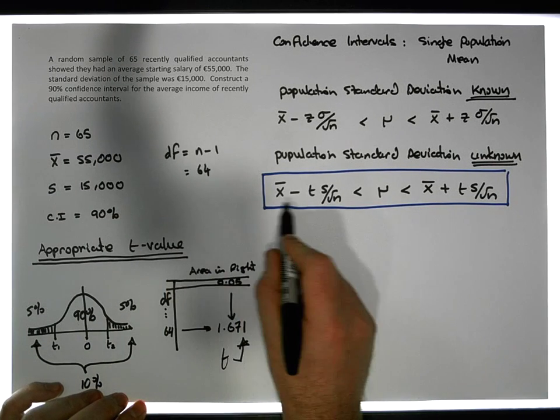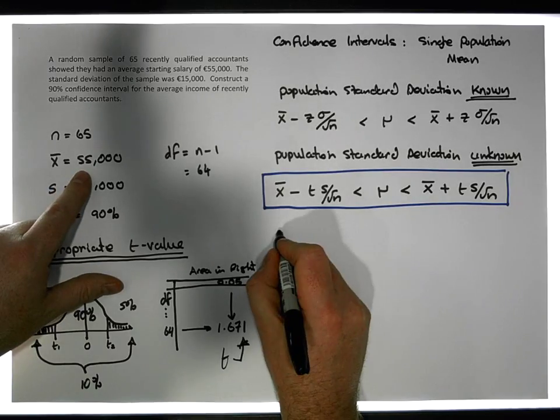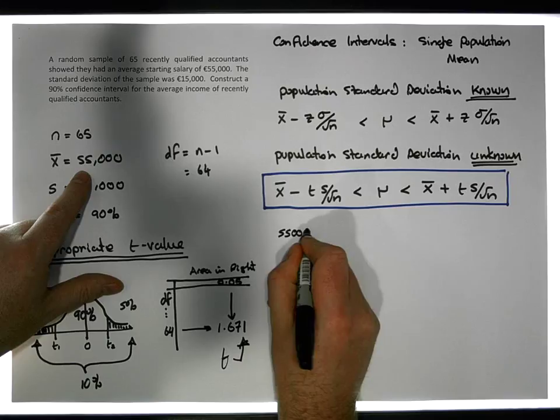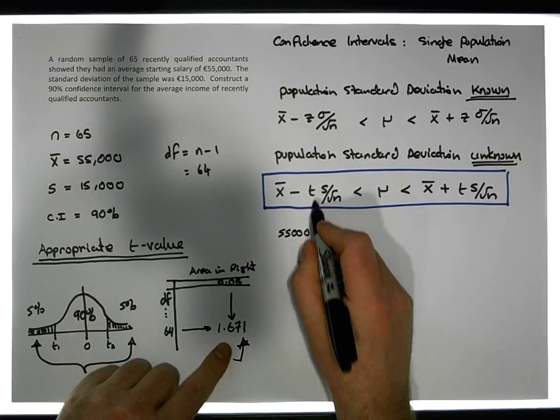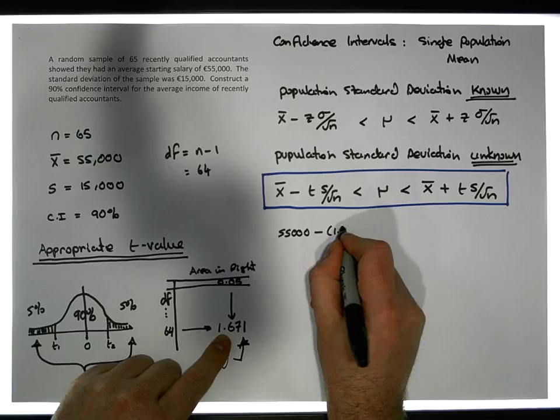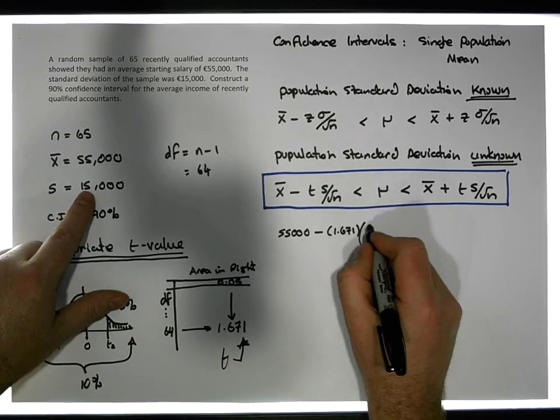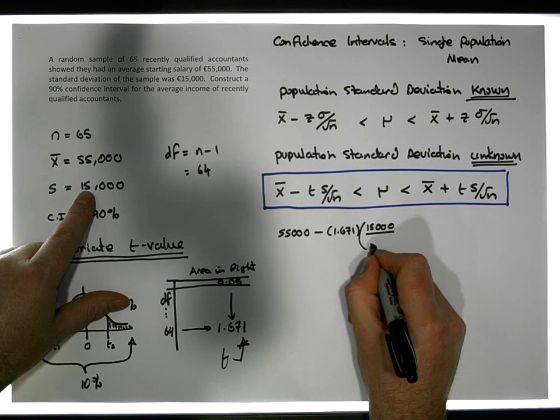Let's substitute in our values. On the right-hand side we're going to have 55,000 euros minus the t-value that's associated with this particular interval, which is 1.671, and that needs to be multiplied by the standard deviation which is 15,000.